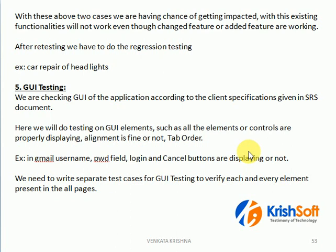What is GUI? In any application, you are going to see the main page of the application. Different elements will be there, like text boxes, buttons, links, combo boxes, list boxes, radio buttons, check boxes — so many elements will be there.